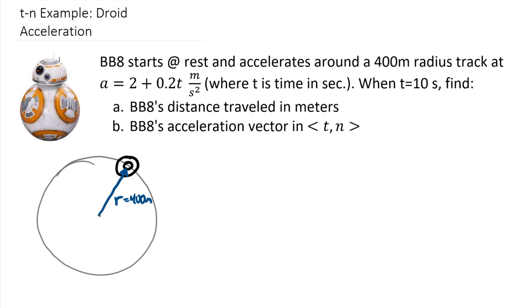And we're given an acceleration function. Now probably one of the more important parts of this problem is to think about what this acceleration is actually telling us. So we're told that he has an acceleration around this circle equal to 2 plus 0.2t meters per second squared. We also know that in tangent normal coordinates, there are two different components to the acceleration, right? There's a tangent and a normal.